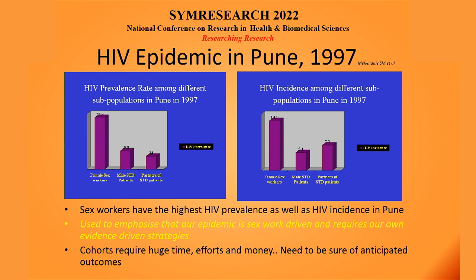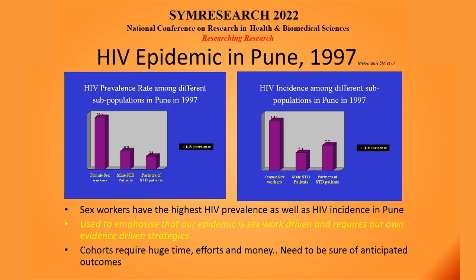What we said was our epidemic is sex-work driven. If it is driven by sex work, we need to look at local evidence and deploy the right kind of strategies. If you look at HIV control strategies, in India we went more towards sex-work-driven approaches focusing on key sub-populations, whereas for the rest of the world it was the general population that they used.